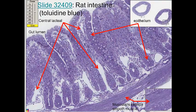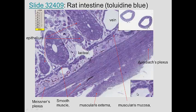Looking at the rat intestine, we can see the mucosa — the epithelium plus the lamina propria (connective tissue) — all the way to the muscularis mucosa and muscularis externa, both of which are muscle. We can even see Meissner's plexus, which regulates contraction of the muscularis mucosa, and Auerbach's plexus — nerve cells that regulate peristalsis, which is contraction caused by the muscularis externa.